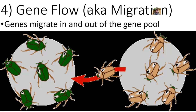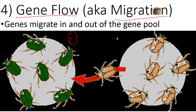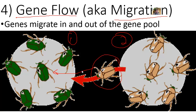The fourth way we see evolution occurring is through gene flow — another name for that is migration — where genes can migrate in and out of the gene pool. Migrating in is called immigration; migrating out is called emigration. For example, if we have two populations of beetles separated by a long distance — population 1 is primarily green, population 2 is primarily brown — if a brown beetle from population 2 comes over and starts mating with beetles in population 1, that introduces new brown genes into population 1, changing the gene pool. Possibly in the future, brown beetles could show up in population 1 just because of those brown beetles immigrating in.